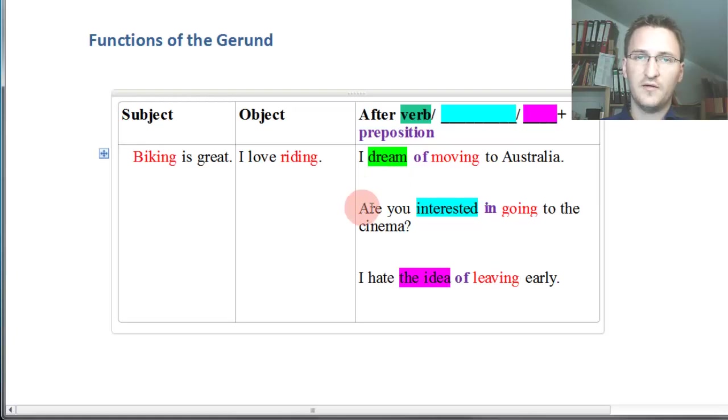Same thing further down. 'Are you interested in going to the cinema?' Interested is an adjective. Then we've got another preposition, and we've got the gerund. So certain adjectives and prepositions are followed by the gerund.